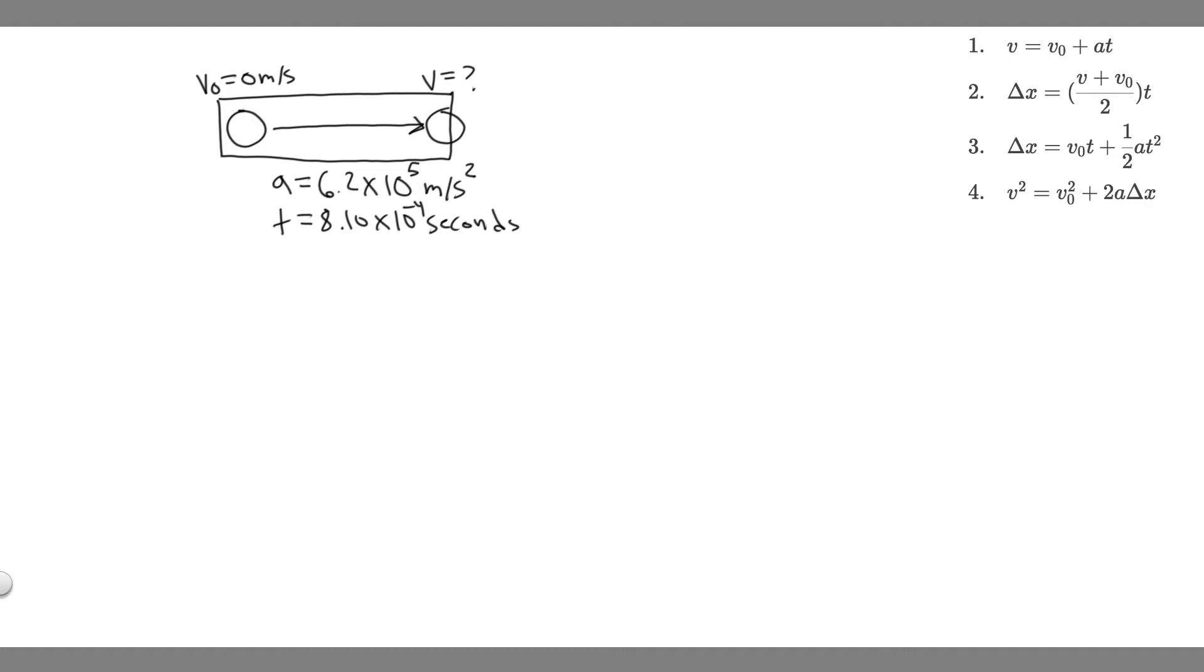In order to solve this problem, the first thing you always want to do is draw what's going on. We have this bullet. Imagine it's starting in this gun. Initially, it's going to start at rest. The initial velocity is going to be 0 meters per second. Then some gunpowder or whatever is going to make it go. It's going to accelerate at 6.2 times 10 to the 5 meters per second squared. The time it's going to do that is for 8.1 times 10 to the minus 4 seconds.